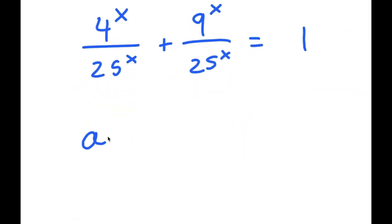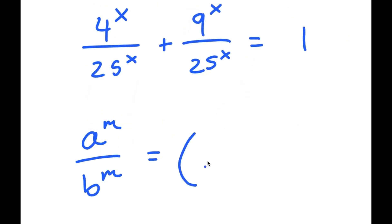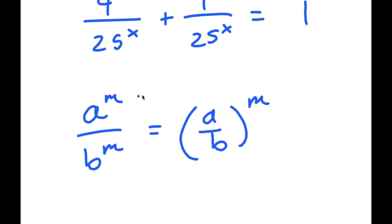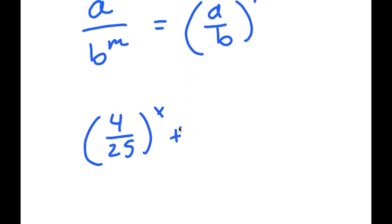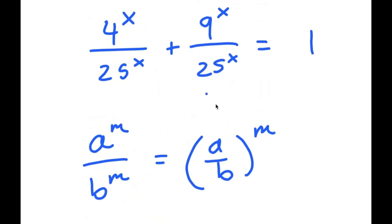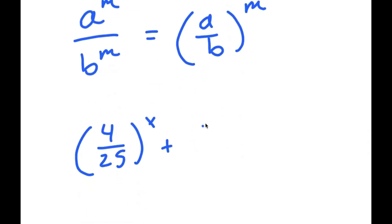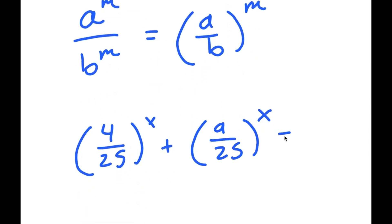Now, if I have something in the form a to the power of m over b to the power of m, this is equal to a over b to the power of m. So 4 to the power of x over 25 to the power of x turns into 4 over 25 to the power of x, and 9 to the power of x over 25 to the power of x turns into 9 over 25 to the power of x.